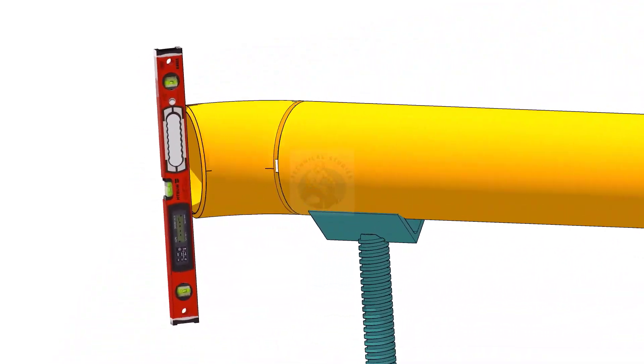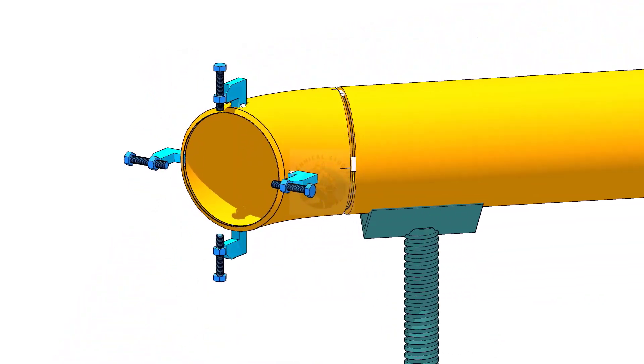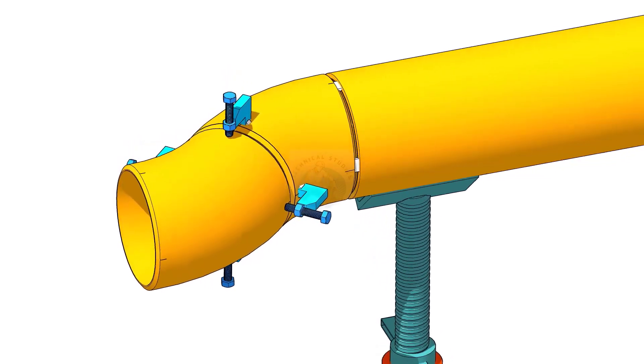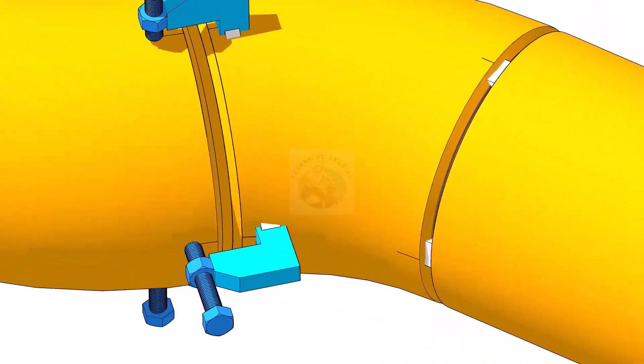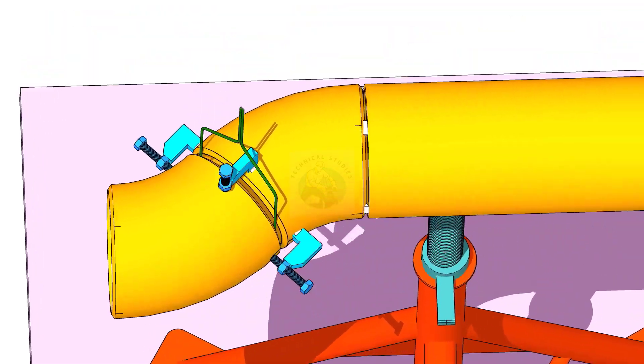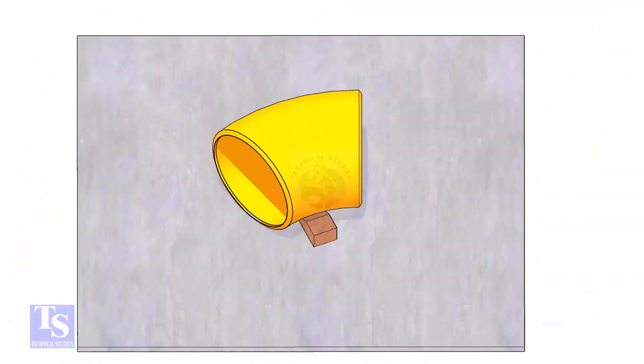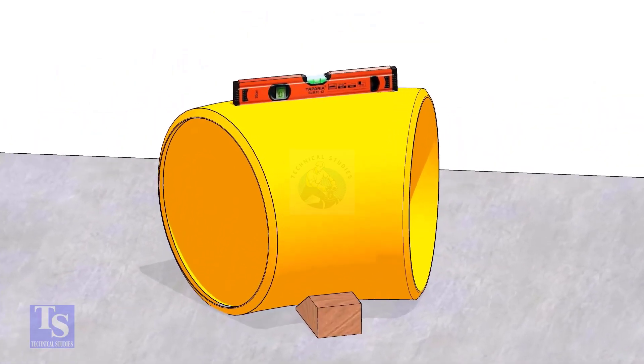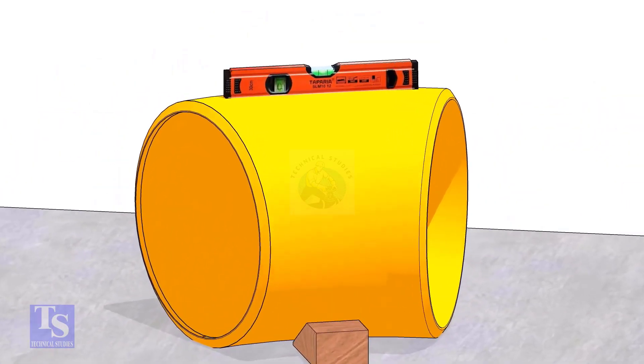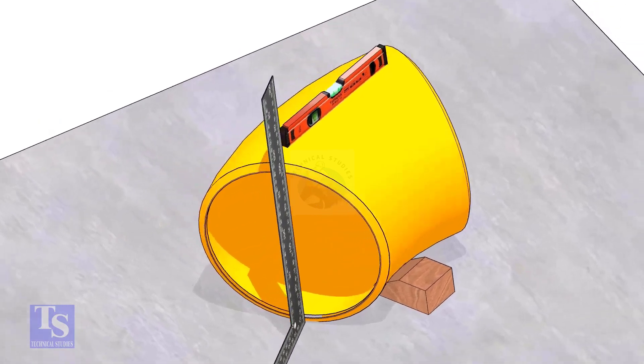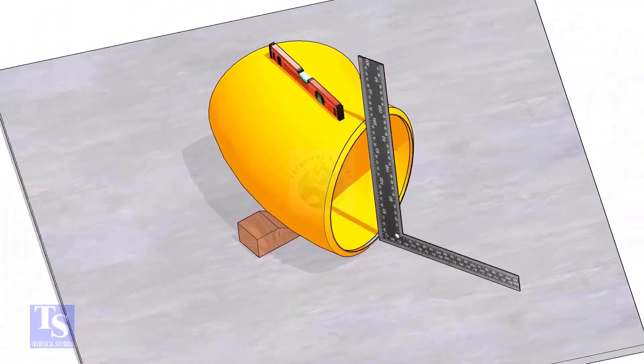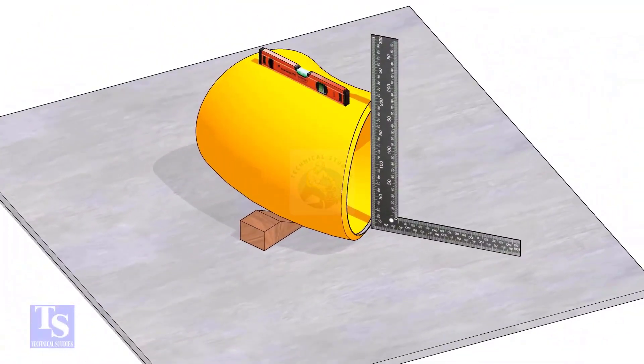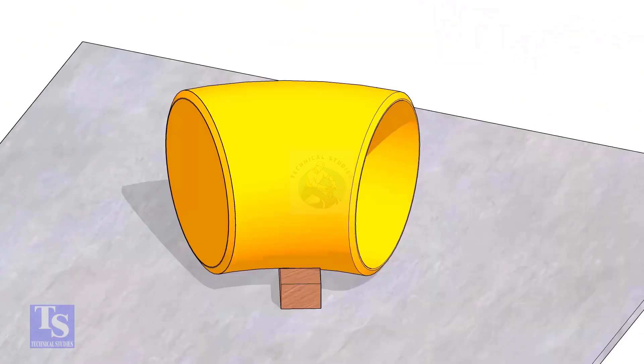Hi friends, welcome to Technical Studies. In this video we will learn how to fit up a 45 degree elbow to another 45 degree elbow. Put one elbow on a straight plate, check the top level, make the faces of the elbow right angle to the plate. Put packing on both sides and fix the position of the elbow, then measure the OD.